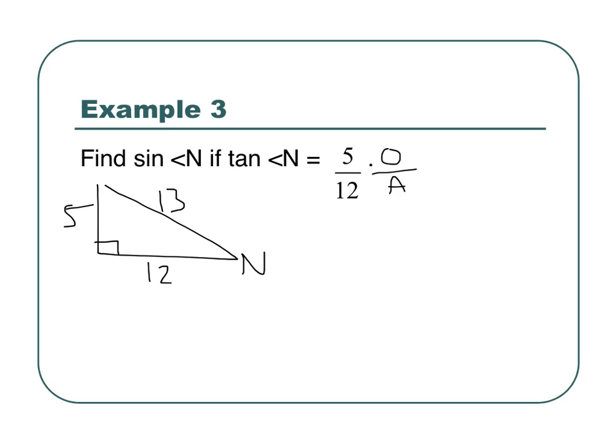Now, I want to find the sine of angle N. So, we're looking at angle N here. We want to find the sine of angle N. That's going to be my opposite over my hypotenuse. So, I have 5 over 13. Holla!